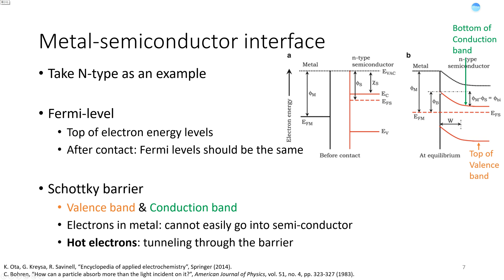So if some electron in metal wants to enter the semiconductor, go into the conduction band, it needs to overcome a potential barrier. This barrier is often referred to as Schottky barrier. Most electrons inside the metal cannot easily go through the barrier, thus cannot enter semiconductor. Only those electrons with enough kinetic energy can tunnel through the barrier.